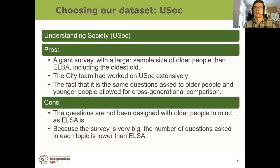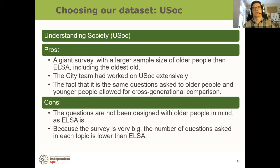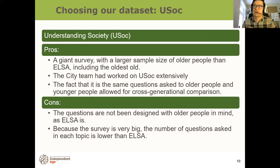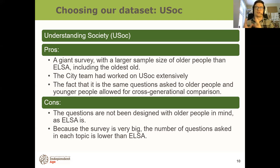In the end we went with the Understanding Society, or USOC, dataset. USOC is a giant survey with a larger sample size of older people than ELSA, including the oldest old, with tens of thousands of people filling it in. The City University team had already worked with USOC extensively, making it quite an attractive option. Most importantly, it allowed us to look at the same questions asked of older people and younger people, so we could get that nice cross-generational comparison. We did have to bear in mind that because the questions are asked of everybody, the number of questions on each topic is lower than ELSA.